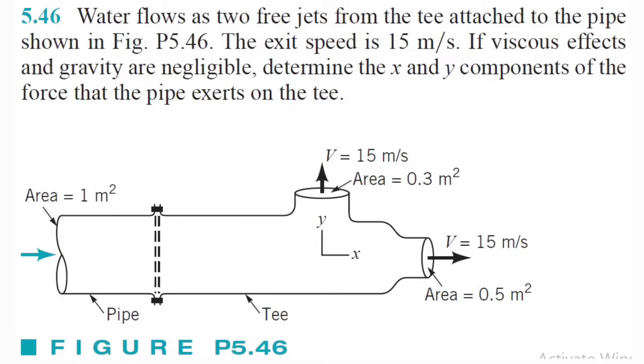Alright, what's going on? We got problem 546 here. Water flows as two free jets from the T attached to the pipe shown. The exit speed is 15 meters per second, and if viscous effects and gravity are negligible, determine the X and Y components of the force that the pipe exerts on the T. Let's go ahead and get started.